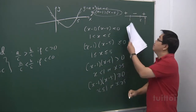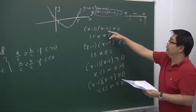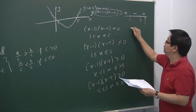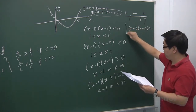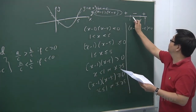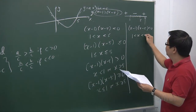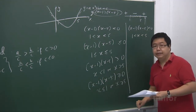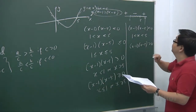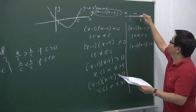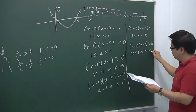You notice that after a while the signs follow a certain alternating pattern. So for (x−1)(x−5) < 0, we are looking at the negative region, giving 1 < x < 5. For (x−1)(x−5) > 0, we look at the positive regions, giving x < 1 or x > 5.